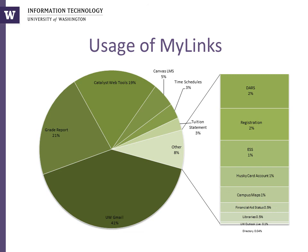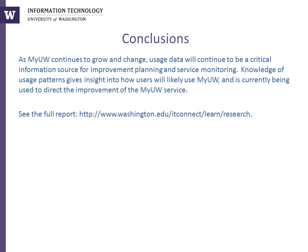The most frequently accessed content, whether on MyUW or MyUW mobile, seems to tell the same story: students want similar things from MyUW. The information they want is specific to them and helps them accomplish vital tasks such as reading and sending email, checking grades, checking or submitting assignments, and checking time schedules or registering. As MyUW continues to grow and change, usage data will continue to be a critical information source for improvement planning and service monitoring. Knowledge of usage patterns gives insight into how users will likely use MyUW and is currently being used to direct the improvement of the MyUW service. See the full report at www.washington.edu/idconnect/learn/research.